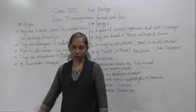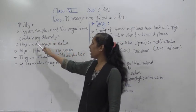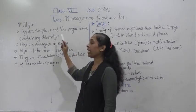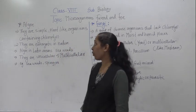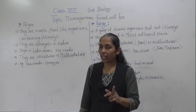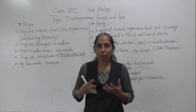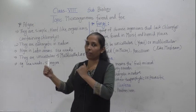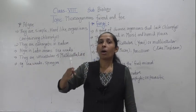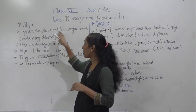The next group is algae. Algae are simple plant-like organisms containing chlorophyll. A very important characteristic of algae is that they are plant-like organisms and contain chlorophyll like plants. However, they do not have leaves, stem, or other plant organs that normal plants have. Algae are plant-like organisms containing chlorophyll but they do not have any plant organs like stem, root, leaves, or branches.